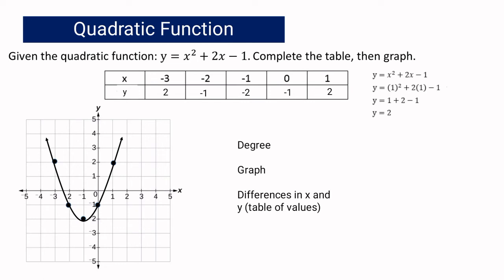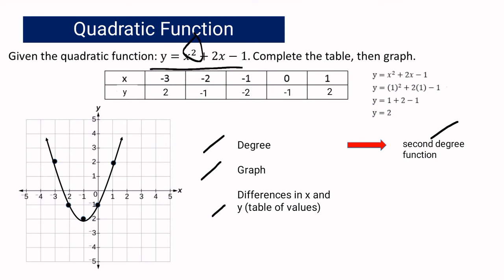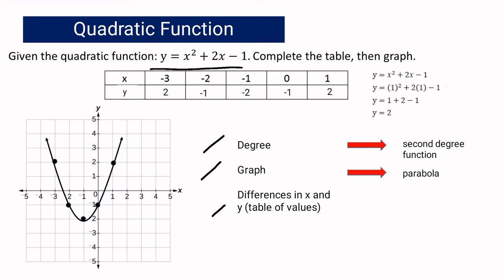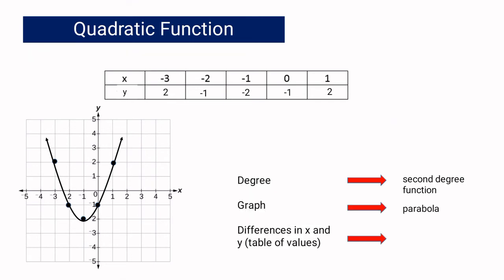Let us compare in terms of degree, graph, and table of values. In terms of degree, the quadratic function is a second-degree function because the highest exponent is 2. In terms of graph, the graph is a smooth curve called a parabola. Now let us look at the differences in x and y.